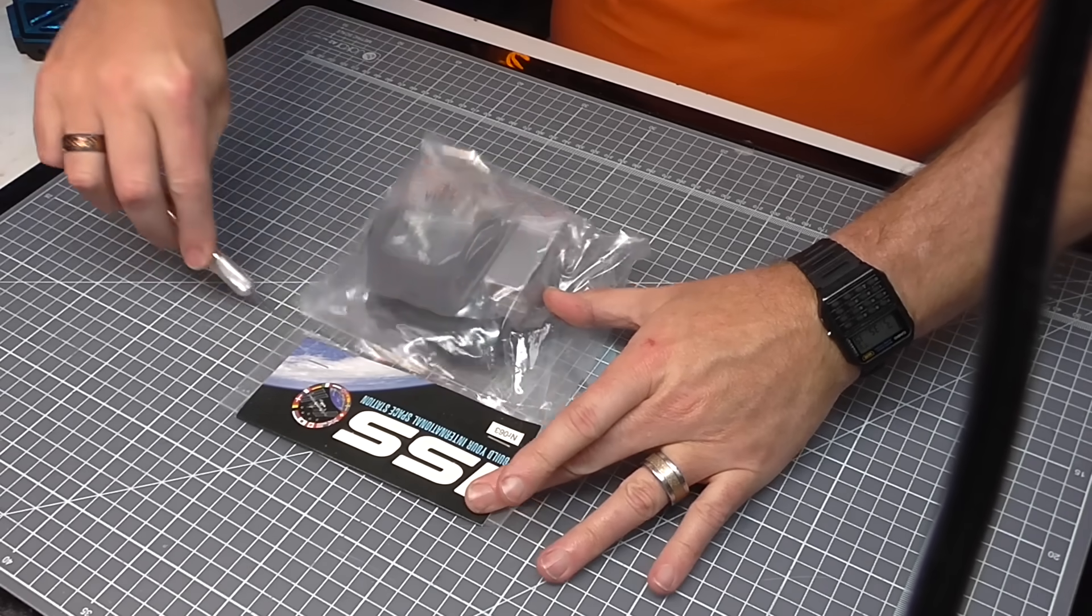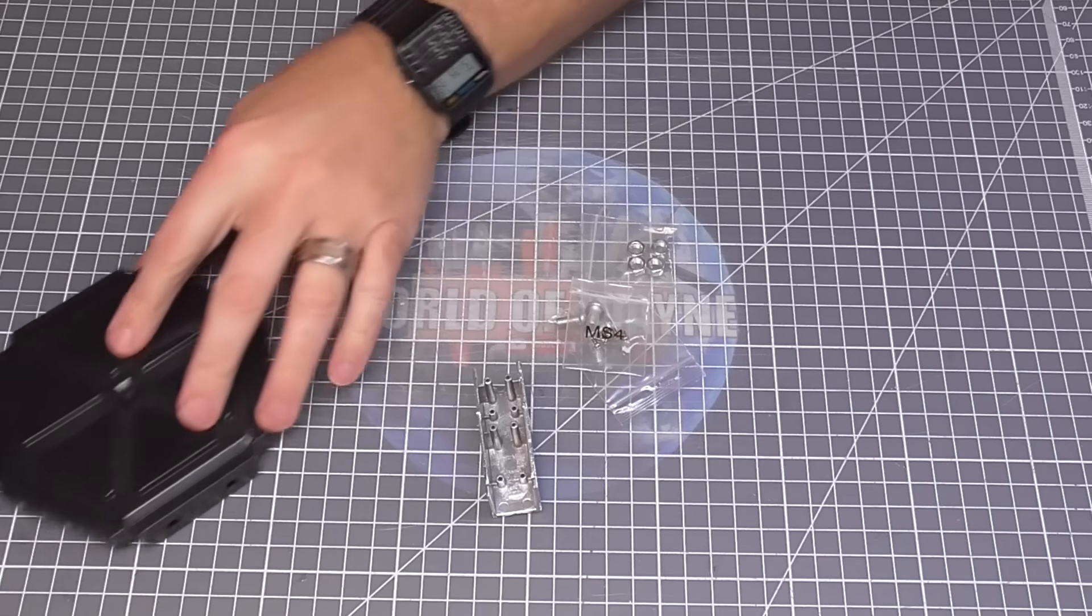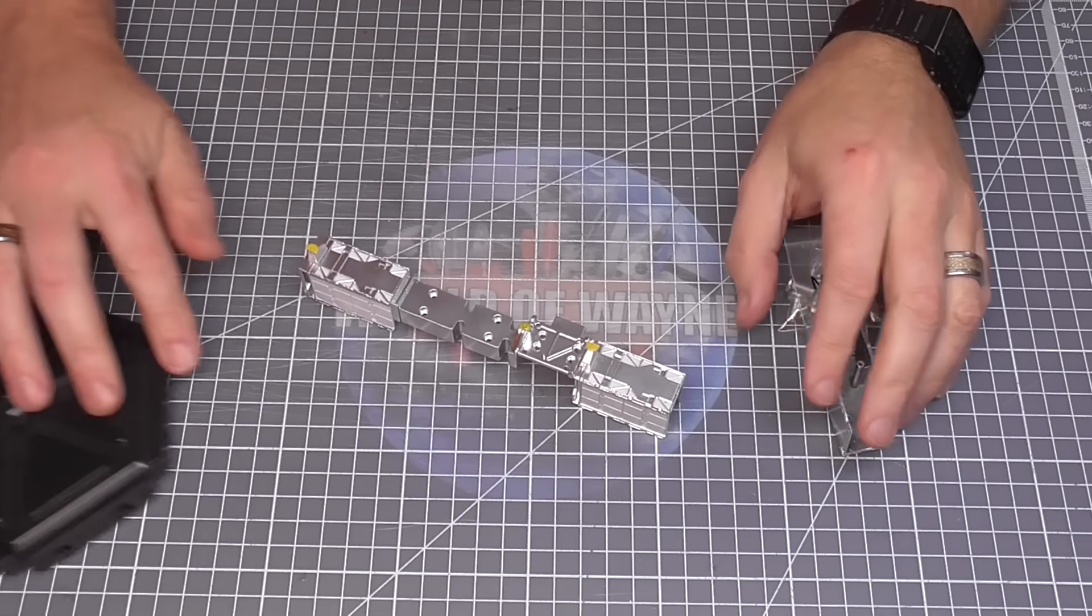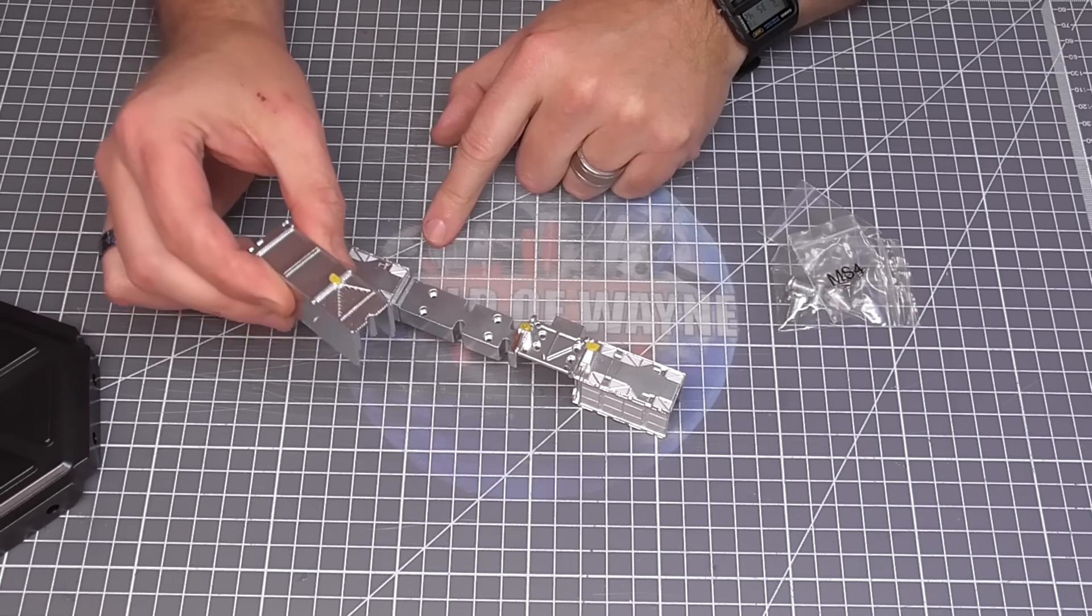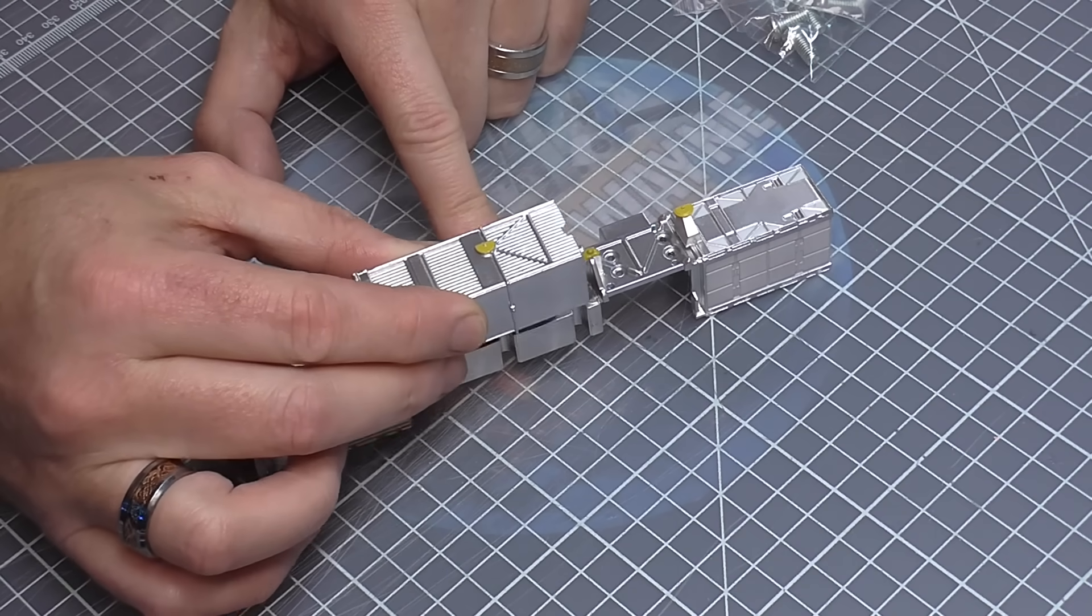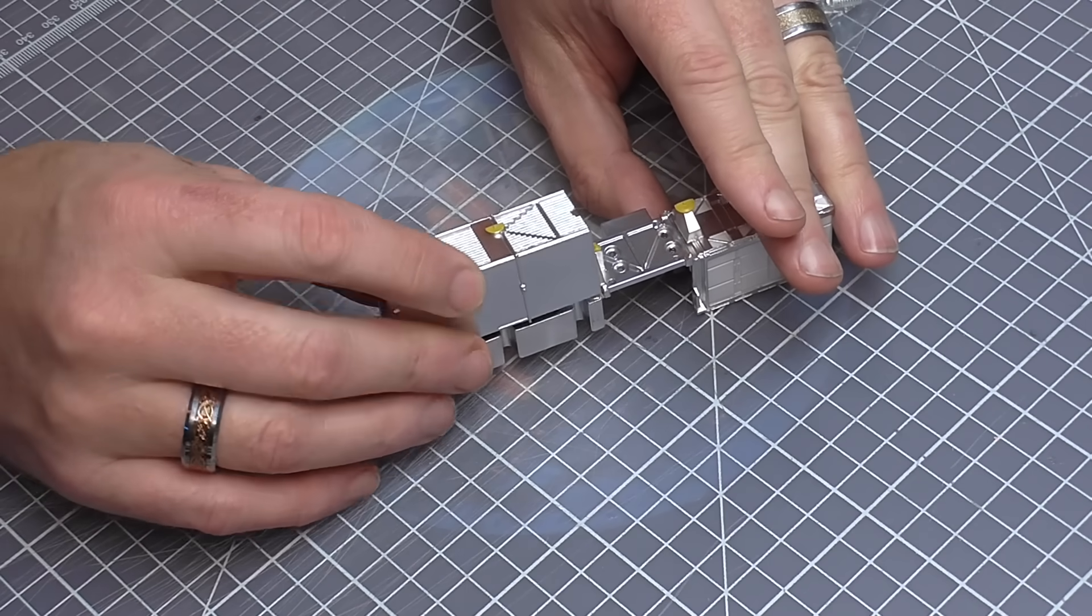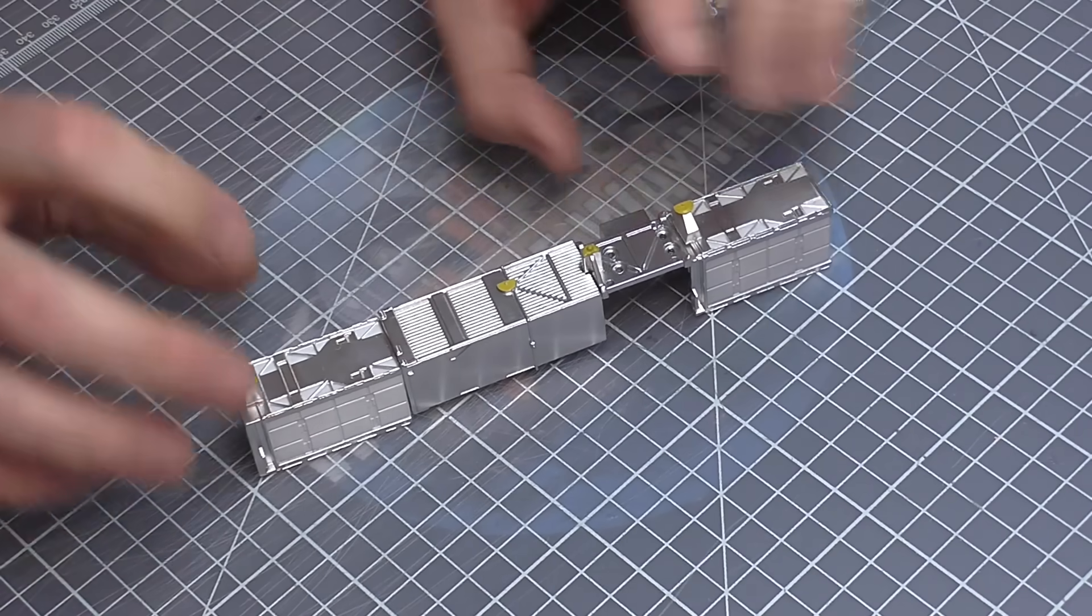So here we go, this is stage 63. Bringing over what we were working on previously, I'm just going to be putting this into position on top here and it's actually going to go in the way you see it here, just over the top like this. It slides down, perfect. Turn it over.